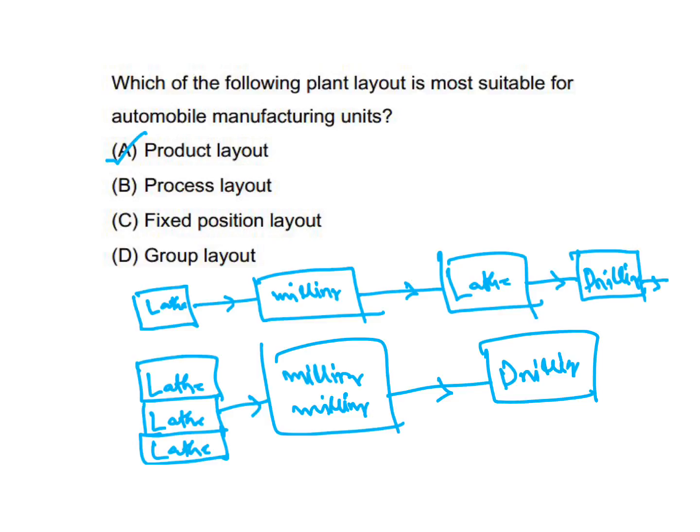Fixed position layout is used for aircraft manufacturing and ship manufacturing. Group layout is a mix of product layout and process layout — when we mix them, it becomes group layout. So the answer is A.